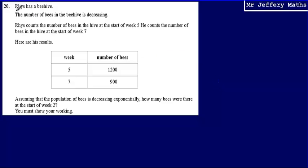This is question 20. We're told that Rhys has a beehive and the number of bees in the beehive is decreasing. Rhys counts the number of bees at the start of week 5 and the start of week 7, and we're given the results in a table. We're then asked to assume that the population of bees is decreasing exponentially.